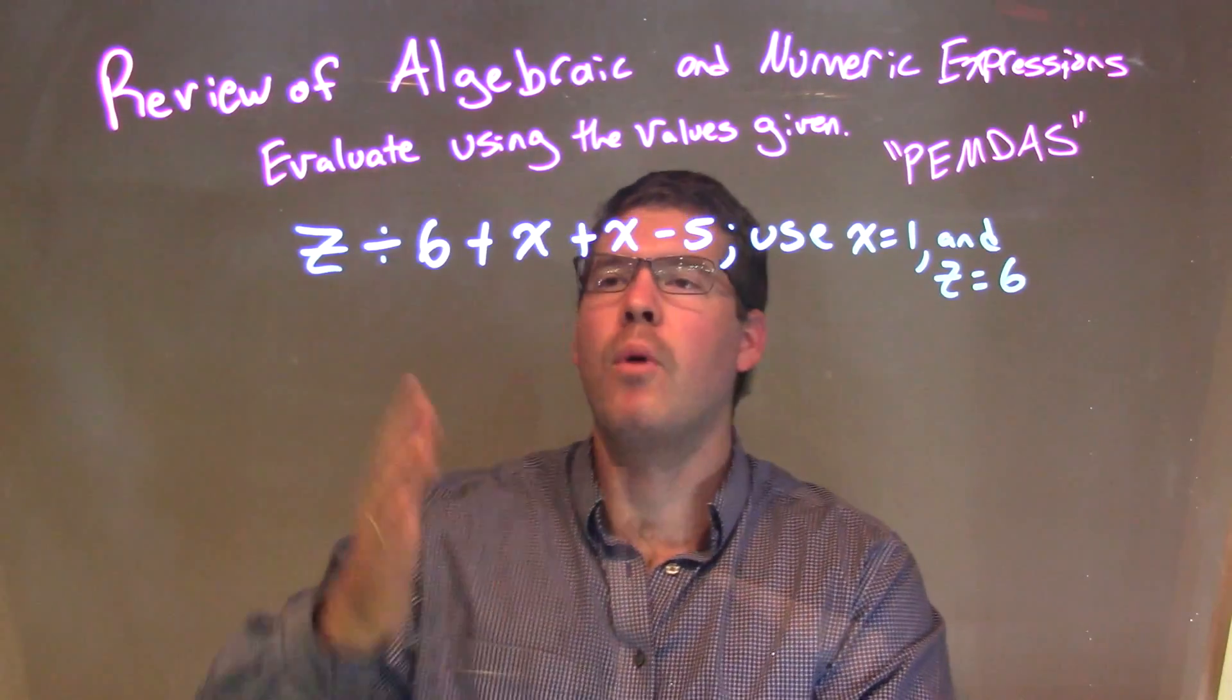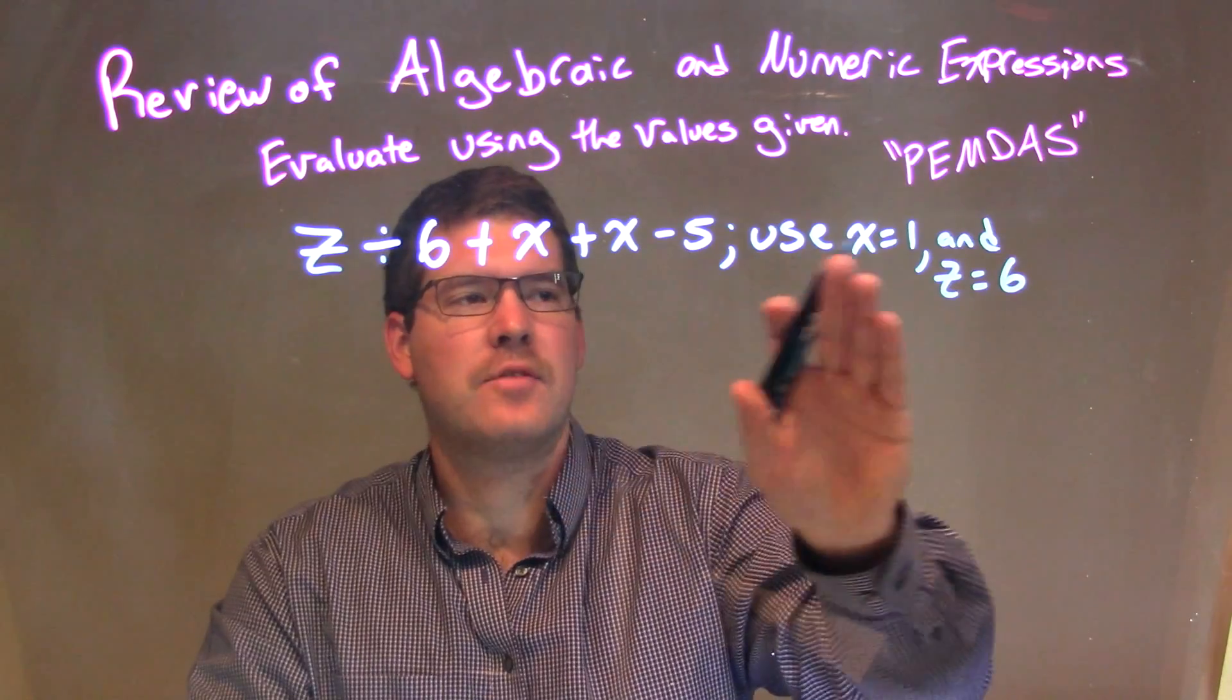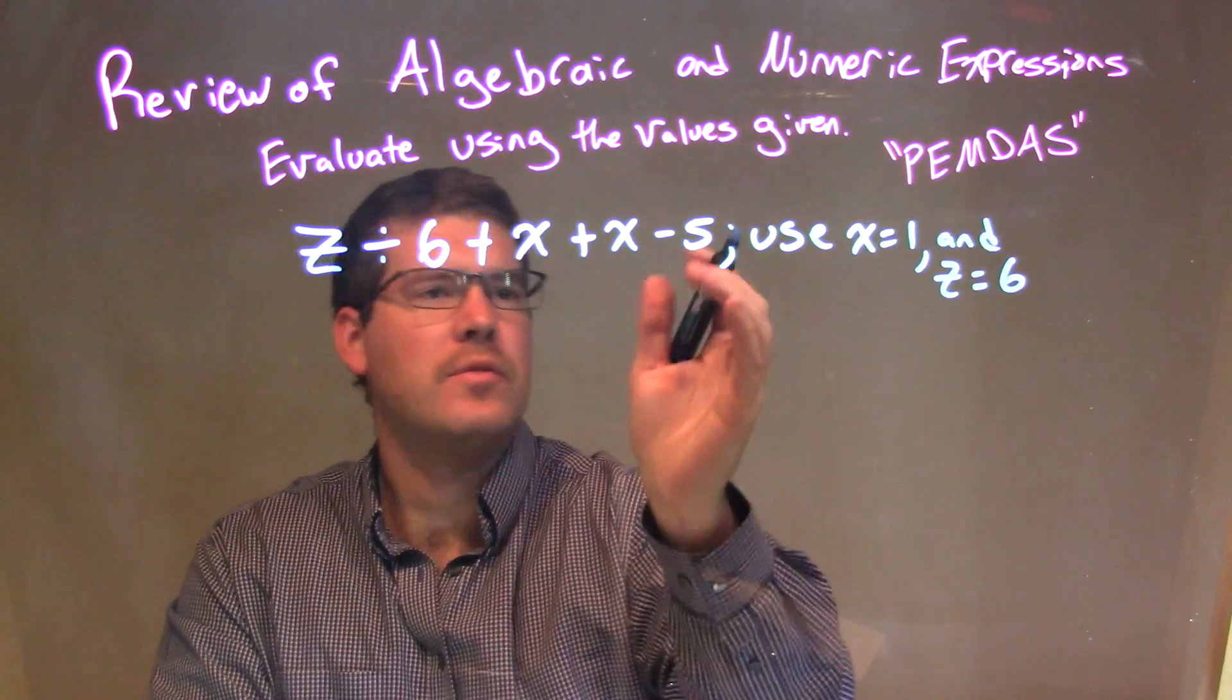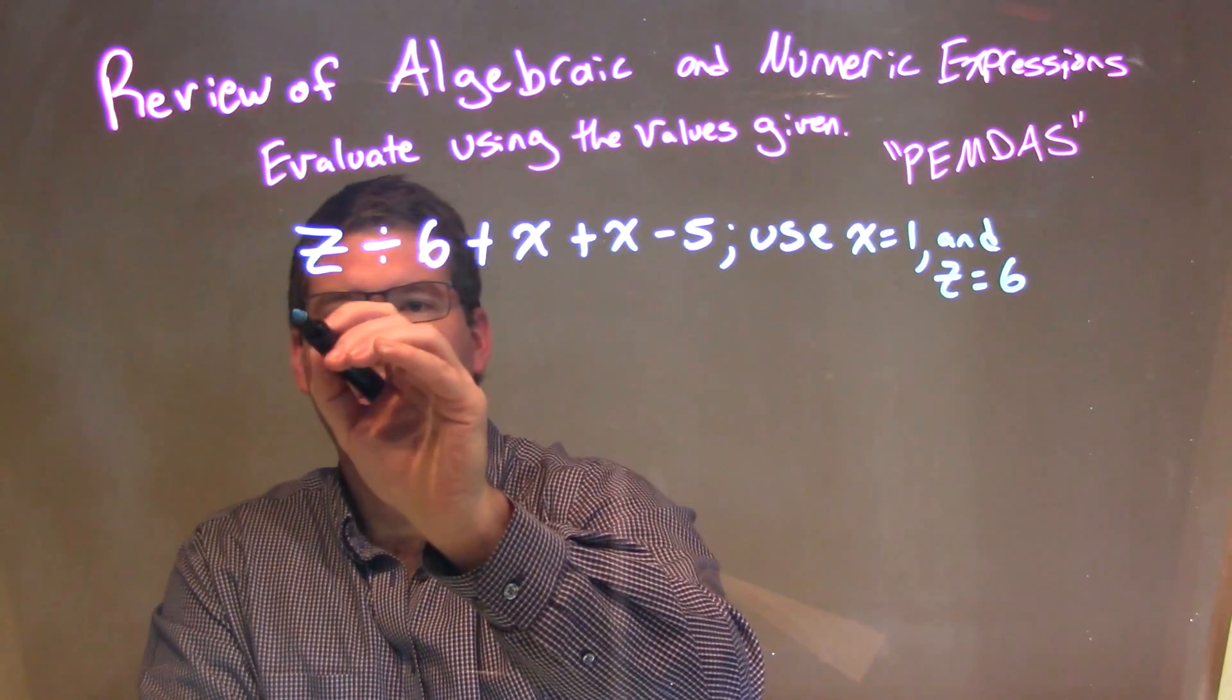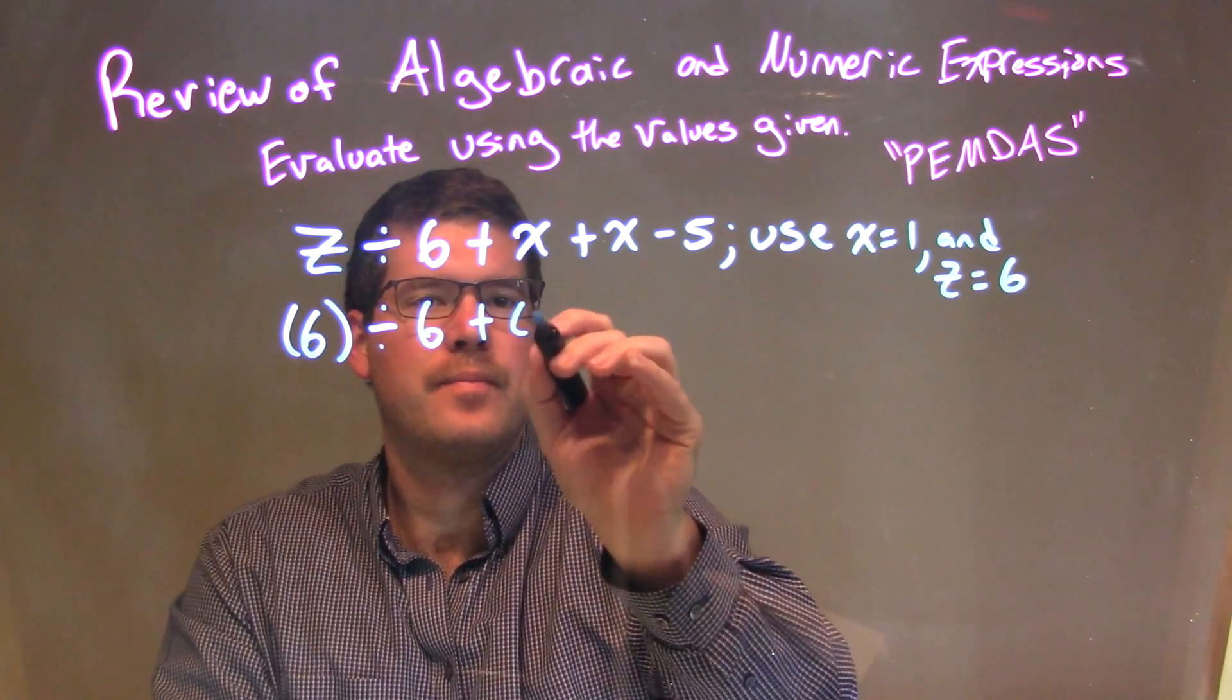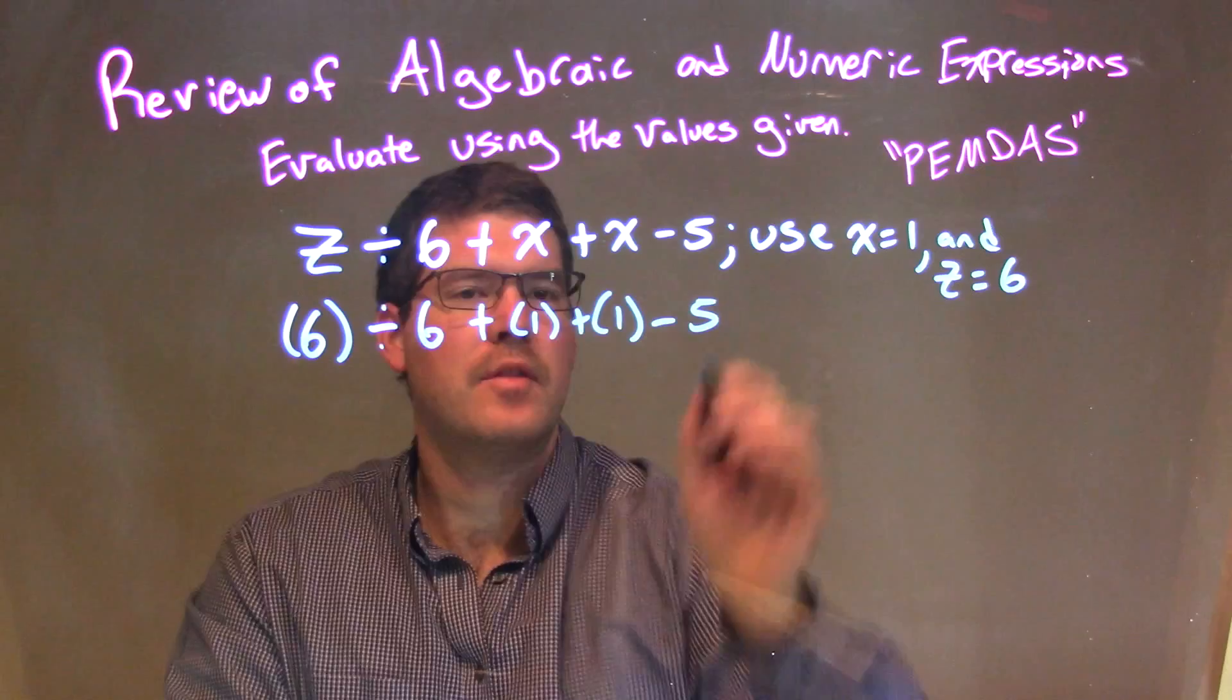Well, what we want to do is take this expression and substitute every single time we see an x a 1 and every single time we see a z a 6. So let's go. When I'm going to substitute it in, when I see a z I'm going to put a 6, and then we'll rewrite everything else. 6 divided by 6 plus x is a 1 plus x is a 1 minus 5.